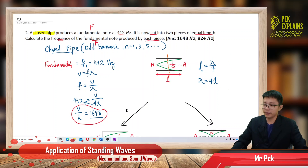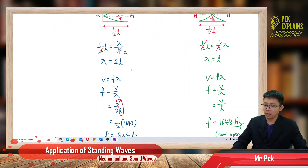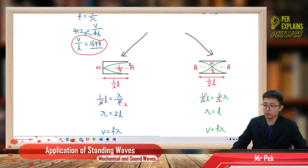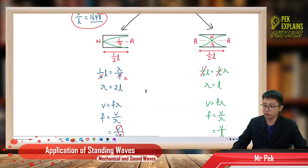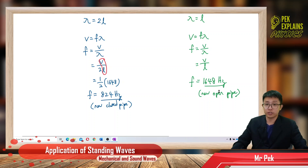This is very simple. Just remember to draw the diagram — from there you get the length of the pipe in terms of lambda, and then apply V = Fλ to find the frequency. Just remember to know the shape of the fundamental mode and you are good to go. That's all, see you in the third question.